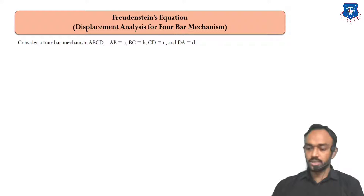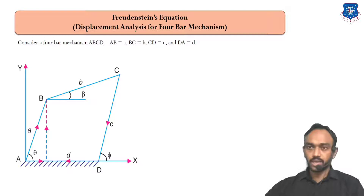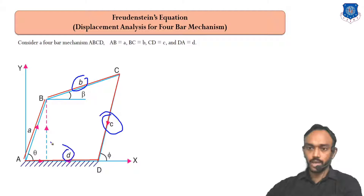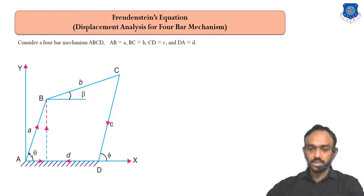Consider a 4-bar chain mechanism A, B, C, D whose link lengths are A, B, C, and D. You can see here — link AB has length A, link BC has length B, link CD has length C, and link AD has length D. All these links are making some angle with the horizontal line. There is a theta angle, and the BCD link is making a phi angle.